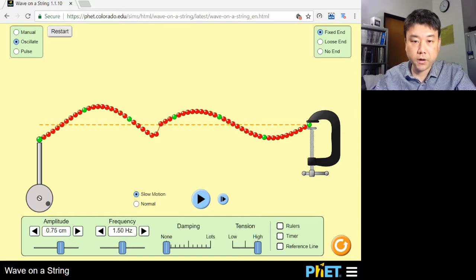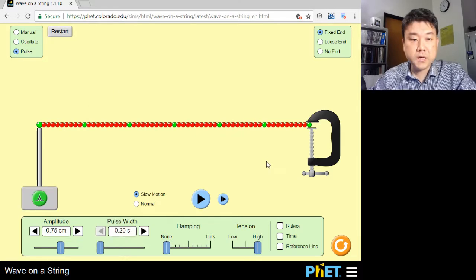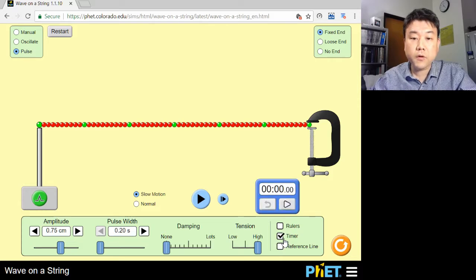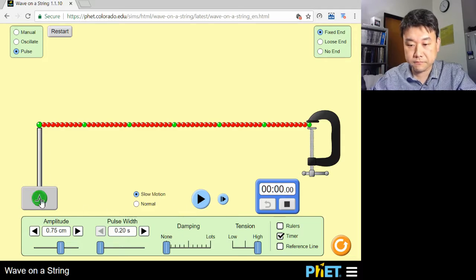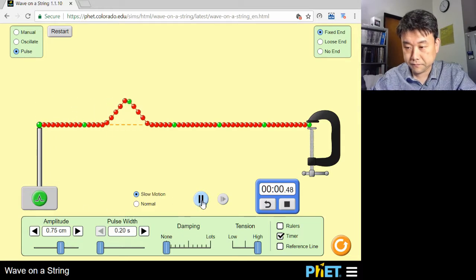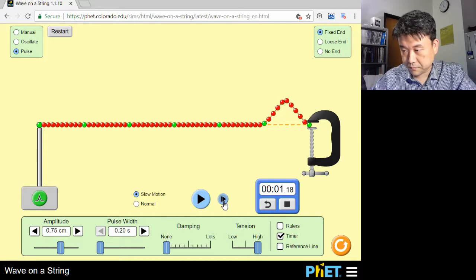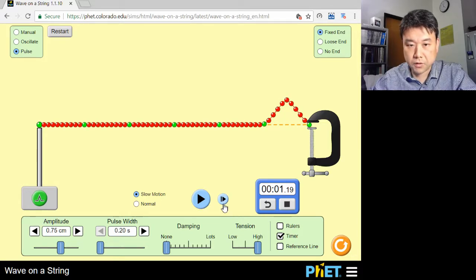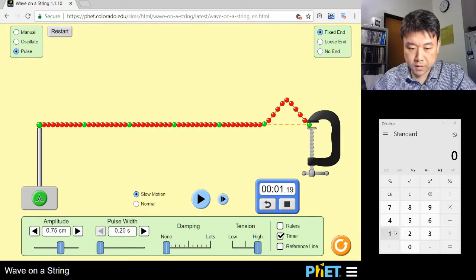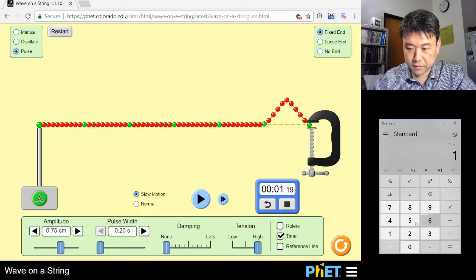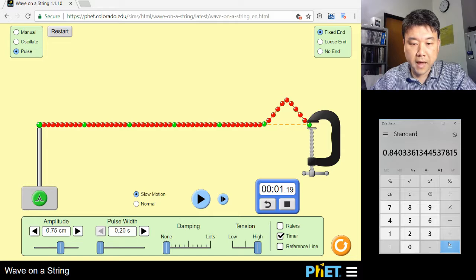The quickest way to figure out the frequency is to measure how much time it takes for a wave pulse to move from one end to the other end of the medium. All right, so that will be the period, meaning the frequency will be 1 divided by 1.19 or 0.84 hertz.